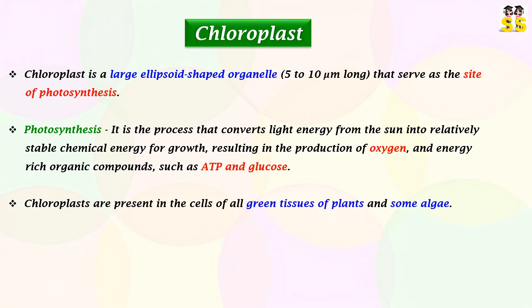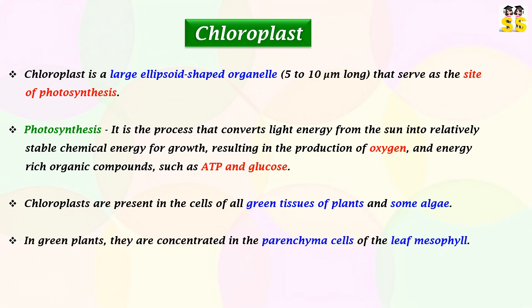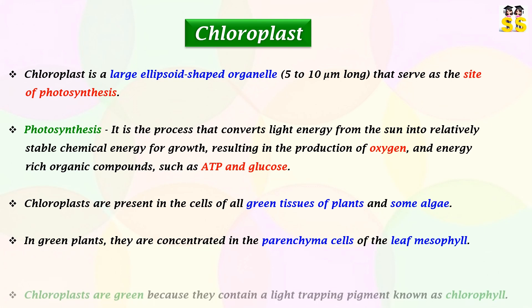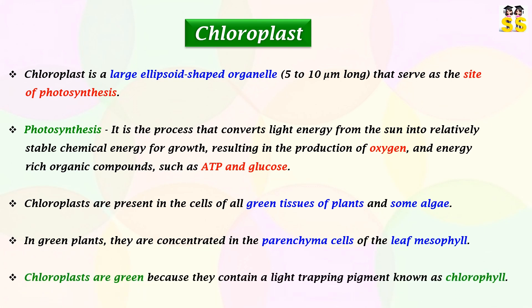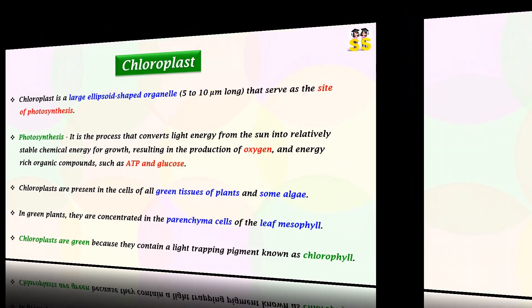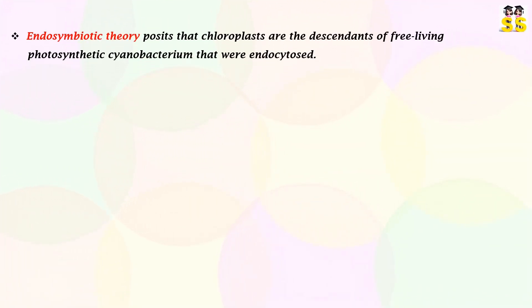Chloroplasts are found in the cells of green plants and certain algae. They are concentrated particularly in the mesophyll layer of green plants. The green coloration comes from a light-trapping pigment known as chlorophyll. Endosymbiotic theory strongly suggests that chloroplasts are descendants of oxygen-producing cyanobacterium that were endocytosed.